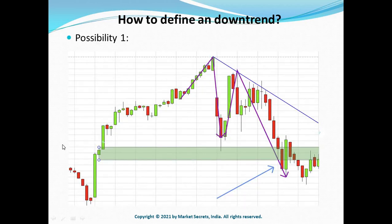Let's take an example. In this example we have two peaks — peak one and peak two — and we have connected both peaks to create a bearish downtrend line which is being respected and not broken. Likewise, we have a demand zone marked in green which is now broken. I've marked an arrow to represent the same.